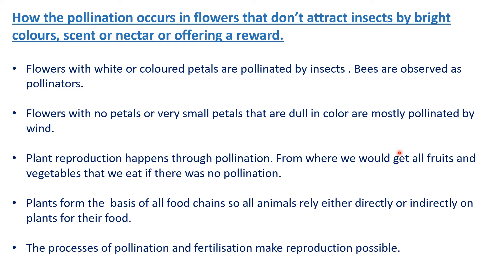So, how does pollination occur in flowers that don't attract insects by bright colors, scent, nectar, or offering a reward? Insects and bees get attracted to the flower because of their colors, petals, scent, nectar, and offerings. But sometimes they are not attracted. Flowers with white or colored petals are pollinated by insects — bees are observed as pollinators. Flowers with no petals or very small petals that are dull in color are mostly pollinated by the wind. Bees are not attracted because there are no petals, no color, no fragrance — so it is pollinated by the wind. The agent, the pollinator, is the wind. When flowers have colors, petals, and everything, the bees are the pollinators.